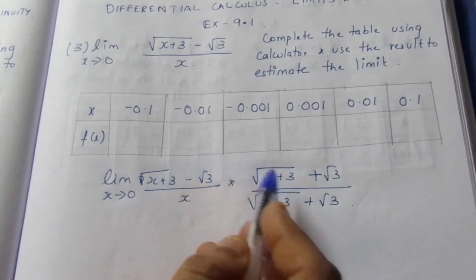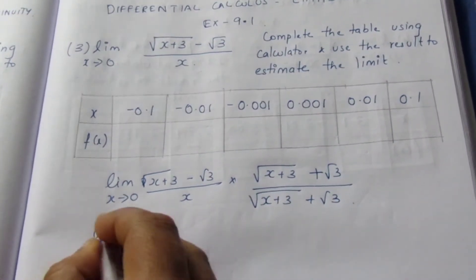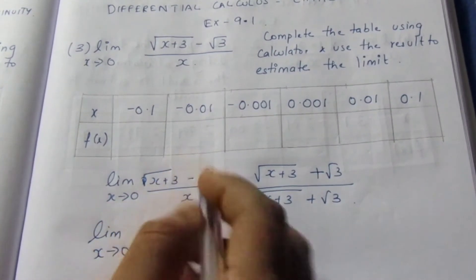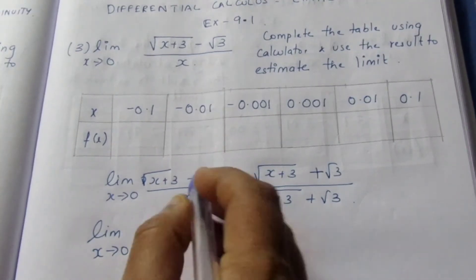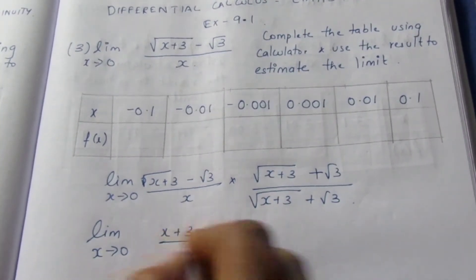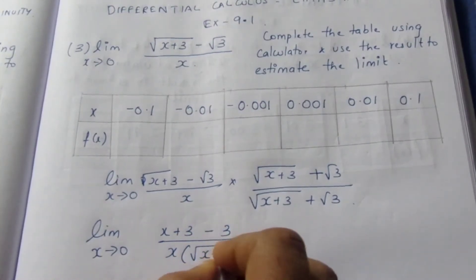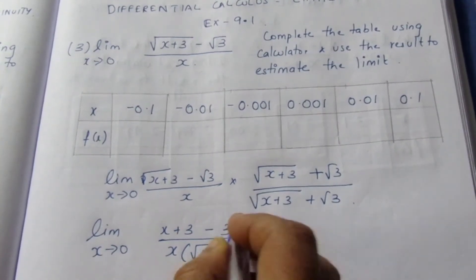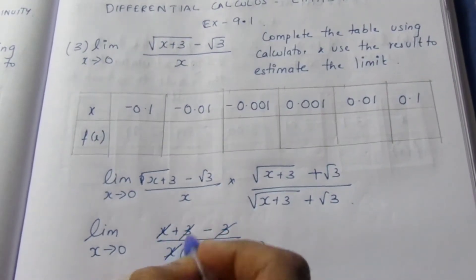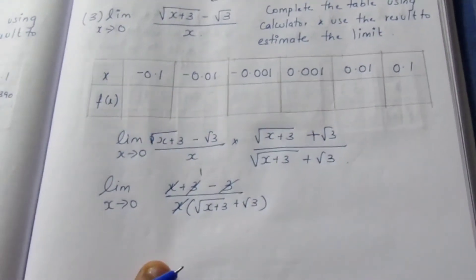Now, this is of the form (a minus b)(a plus b). We will use the formula a squared minus b squared. The square root and square cancel, giving us (x plus 3) minus 3, which equals x, in the numerator. The denominator becomes x times (root of x plus 3 plus root 3). We then cancel x.